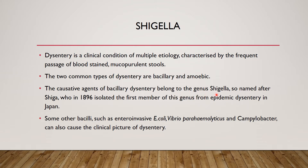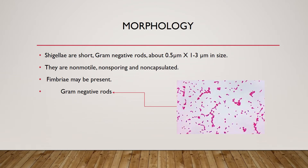The two common types of dysentery are bacillary and amoebic. The causative agent of bacillary dysentery belongs to the genus Shigella, named after Shiga, who in 1896 isolated the first member of this genus from epidemic dysentery in Japan. Some other bacteria such as enteroinvasive E. coli, Vibrio parahaemolyticus, and Campylobacter can also cause the clinical picture of dysentery.